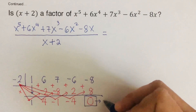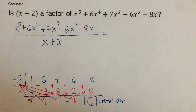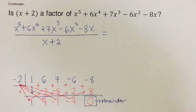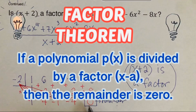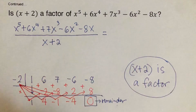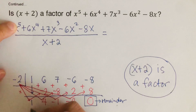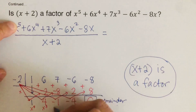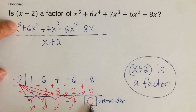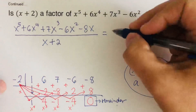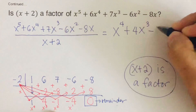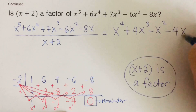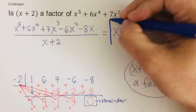Since the remainder is 0, x plus 2 is a factor. The reason x plus 2 is a factor is because the remainder is 0. To write the quotient, remember the original polynomial is degree 5, so the quotient terms go from x to the 4th down: x to the 4th, x cubed, x squared, x. The quotient is x to the 4th plus 4x cubed minus x squared minus 4x.